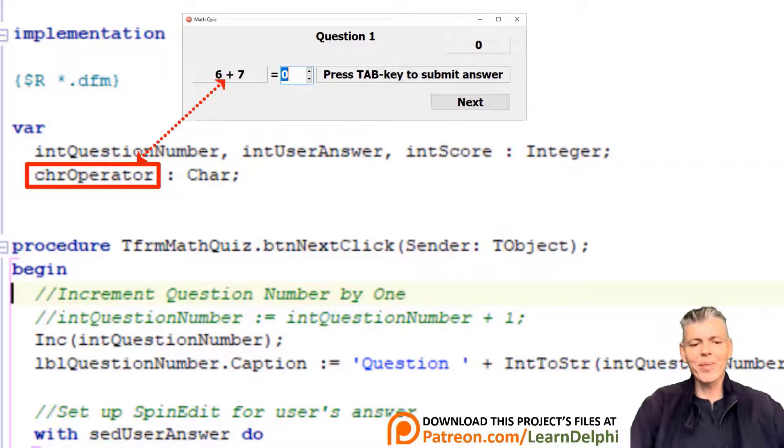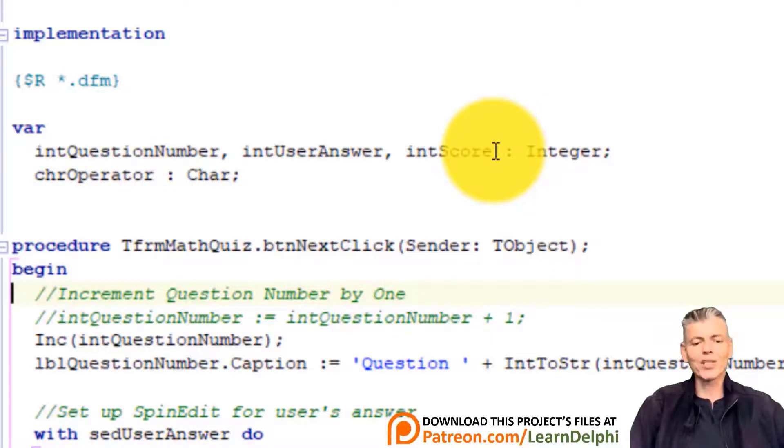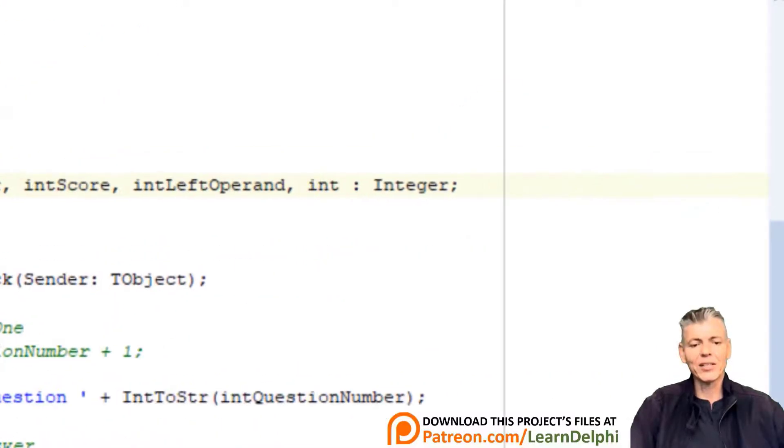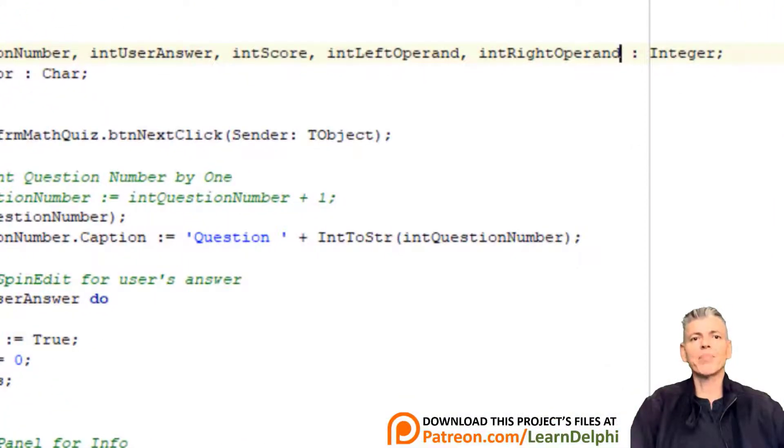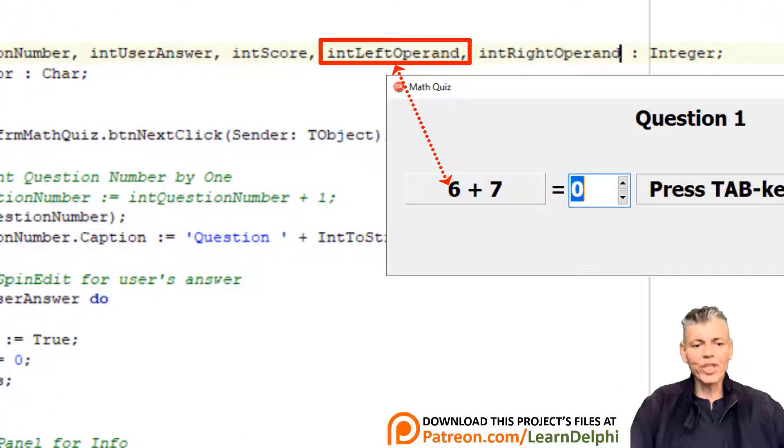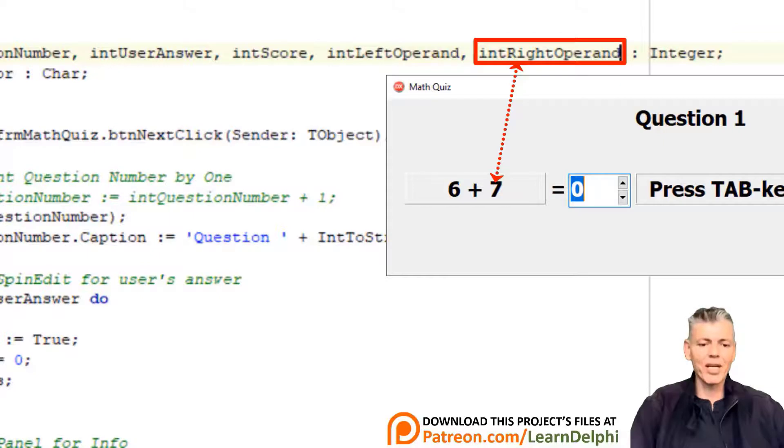We also have a char for the mathematical operator. We will only do additions for now, so the char will be a plus sign. Later it will also store other random arithmetic operators like minus and multiply. We need more variables for random numbers. Put your cursor here and type intLeftOperand, intRightOperand as integer. I mentioned before that byte variables will be suitable for all these numbers because they are lower than 255, but I made them integers so that you can play with bigger numbers later. intLeftOperand will be used to show a random number in front of the plus sign. intRightOperand will be for the random number after the plus sign.